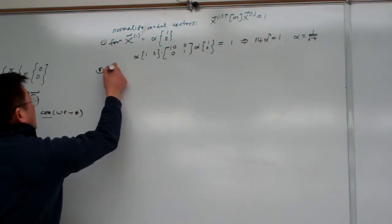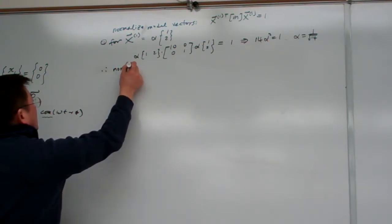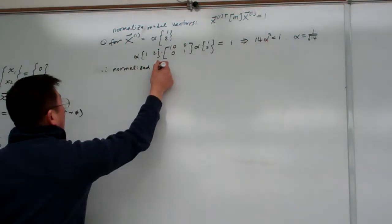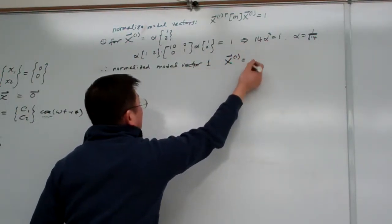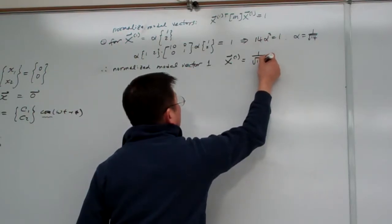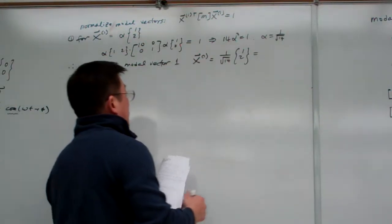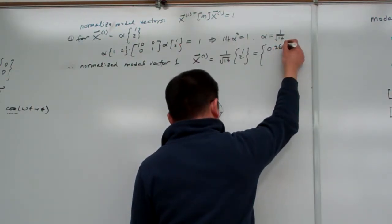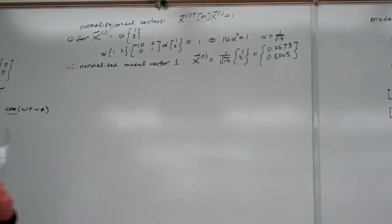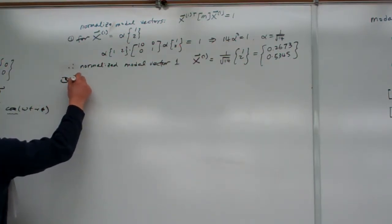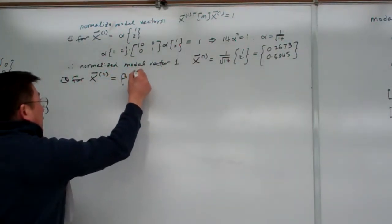And, so therefore, the normalized modal vector 1 equal to 1/√14 times [1; 2], and that one is equal to [0.2673; 0.5345]. And then, for the second modal vector, we use different scaling factor β times [1; -5]. The same thing. β times transpose of the modal vector, multiply with mass matrix, and then times β [1; -5].